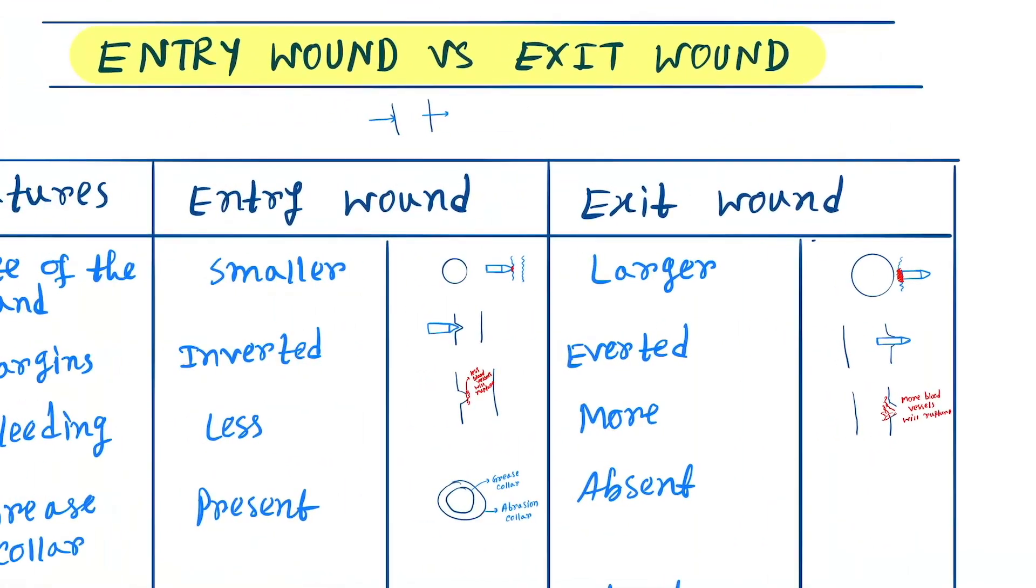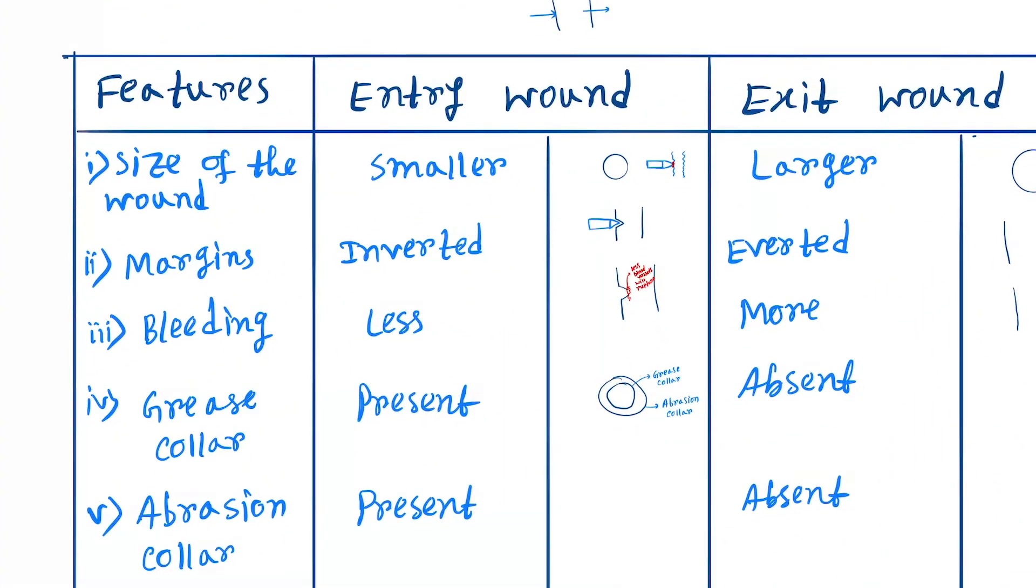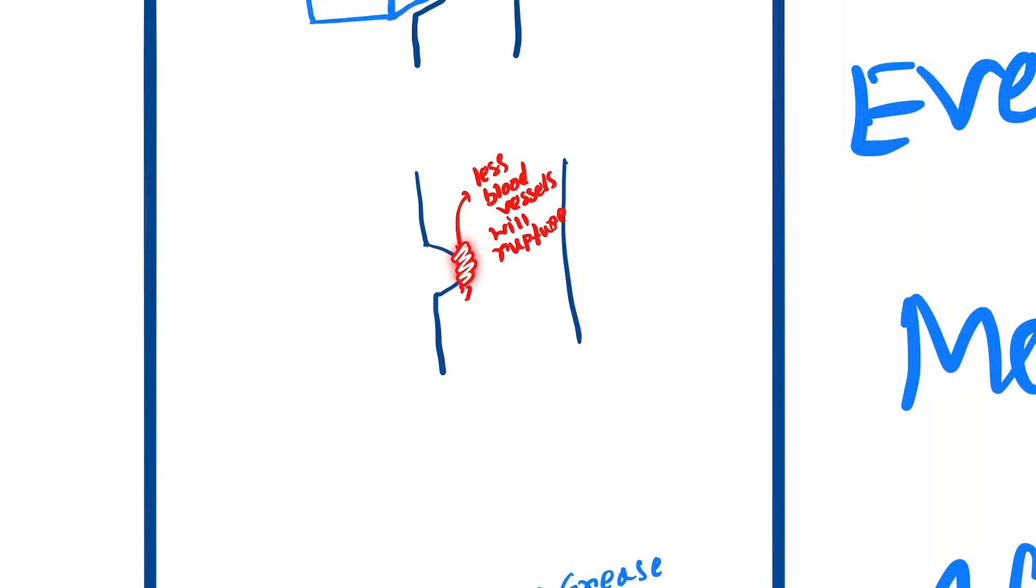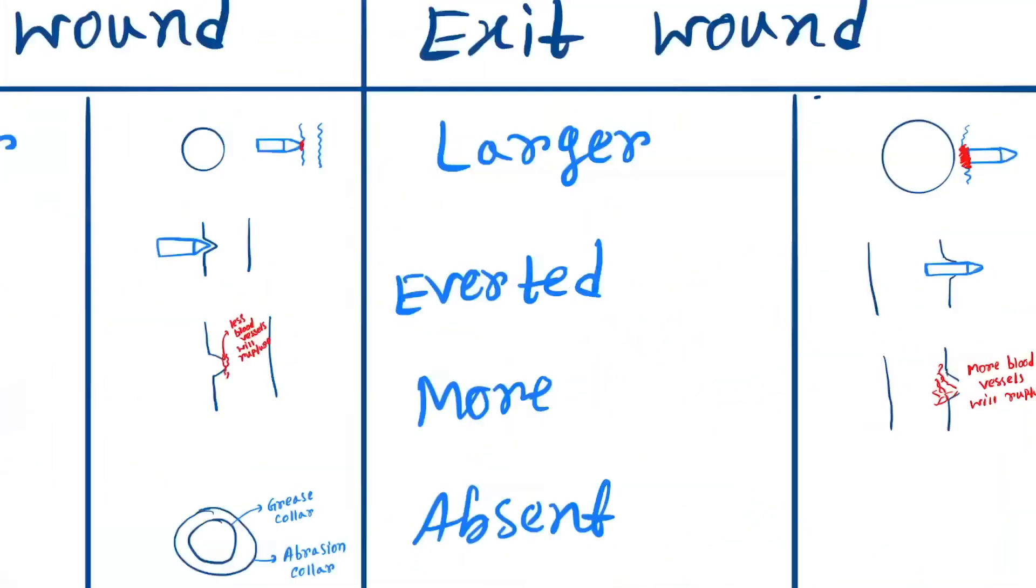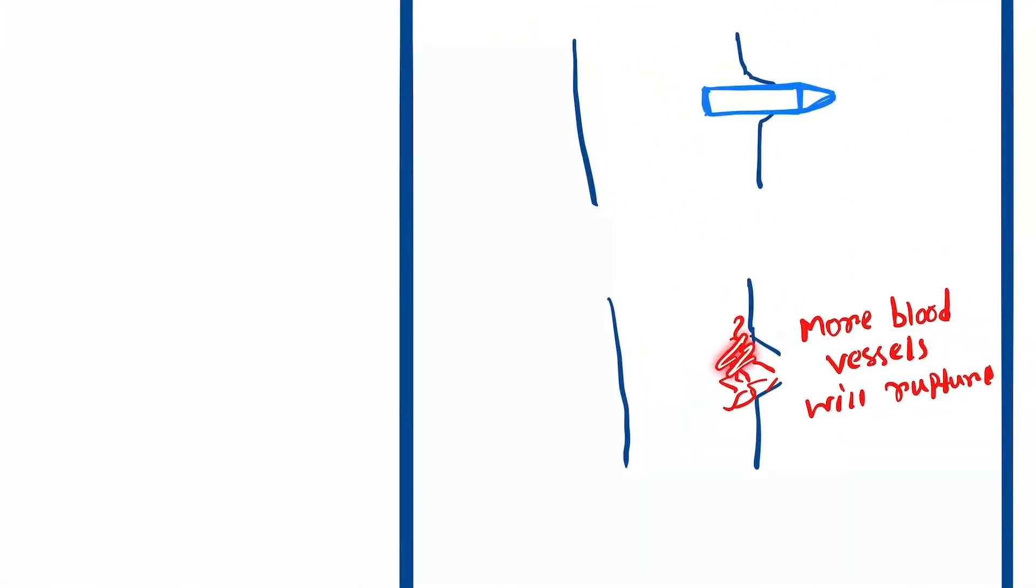Next is bleeding. In entry wound, the blood vessel rupture is less - a smaller number of blood vessels rupture. But in case of exit wound, more blood vessels get ruptured, so the bleeding will be more.